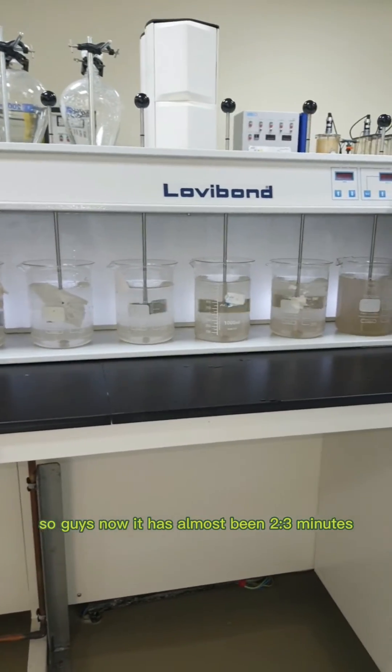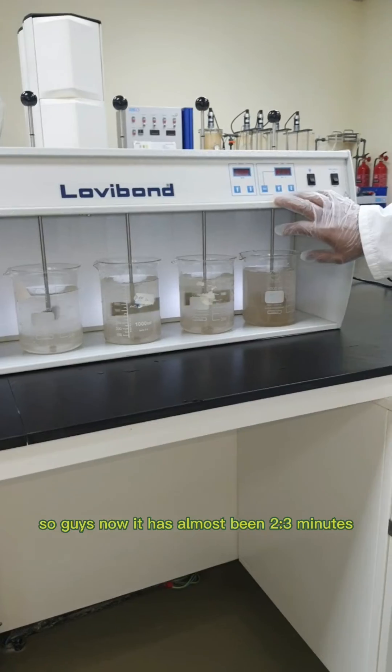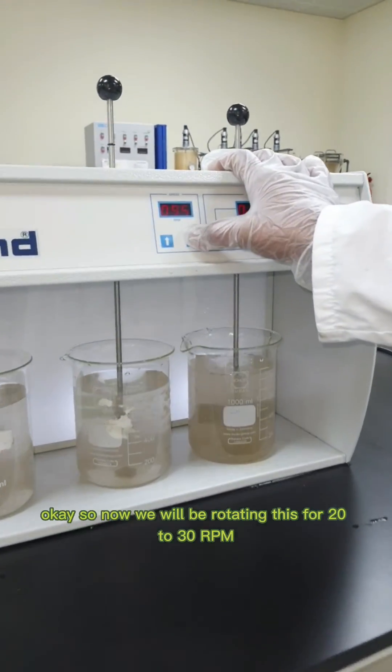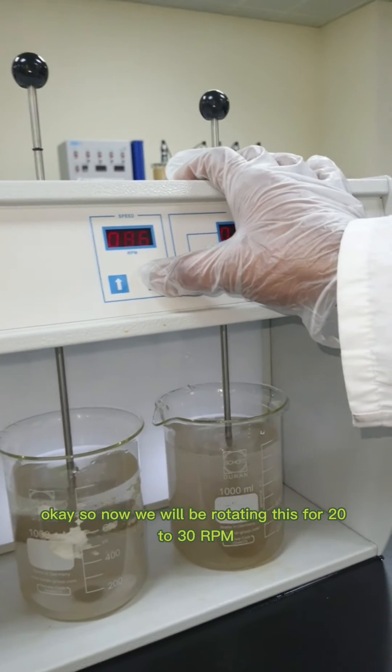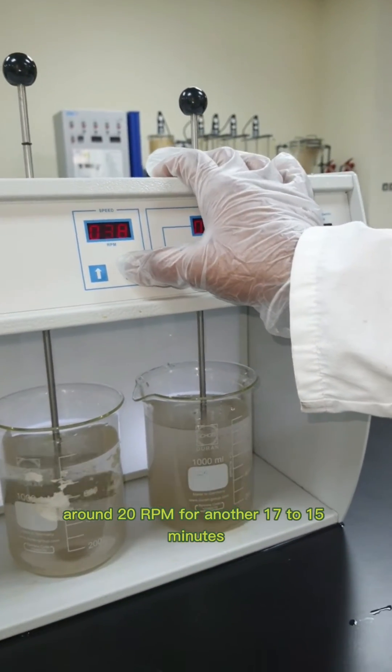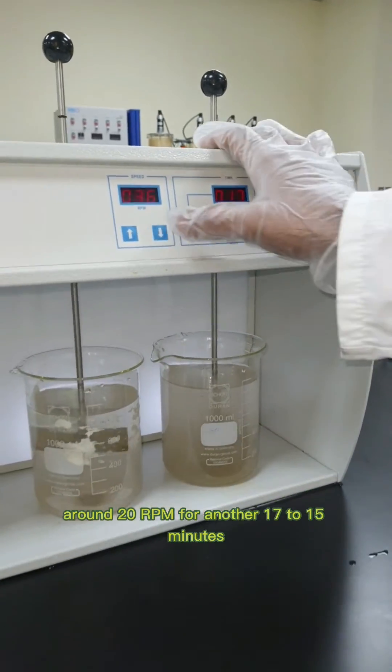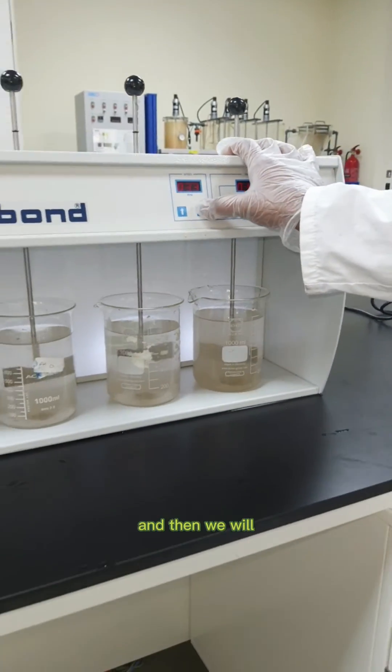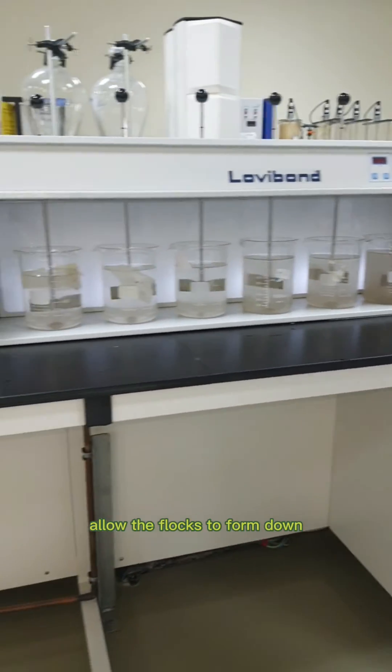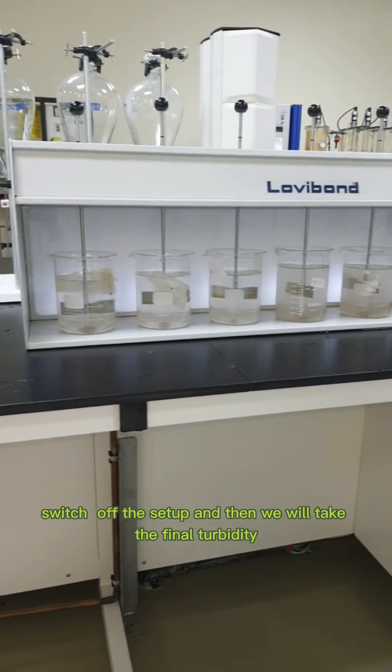It has been two to three minutes at high RPM, so now we will decrease the speed. We will be rotating this at 20 to 30 RPM, around 20 RPM, for another 15 to 17 minutes. Then we will allow the flocs to settle down after switching off the setup, and then we will take the final turbidity.